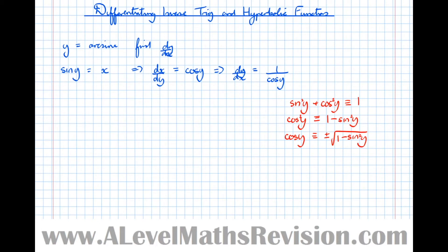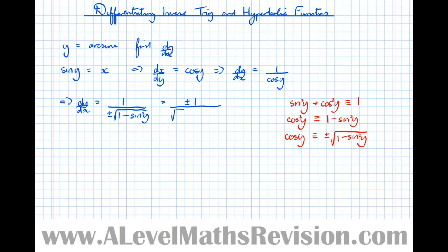So dy by dx equals 1 over ±√(1 − sin²y). Since we defined x to be sin y, that becomes dy by dx equals ±1 over √(1 − x²).